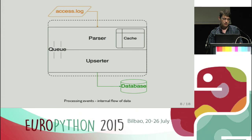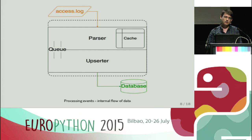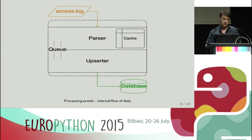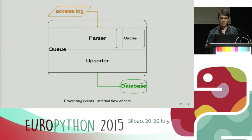Besides pushing data into the database, the absorber also logs into a special file — we call it the bin log file — every event it has pushed into the database along with the offset of the access log. This means that in the event of a crash or a restart, the service will know which point was the last point inserted into the database and can restart from that point on.